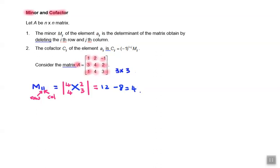How about cofactor? Cofactor is denoted by Cij with the formula negative 1 raised to power i plus j times Mij. This i refers to number of rows and j refers to number of columns.